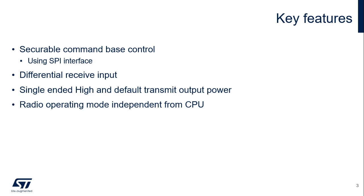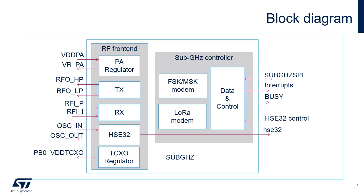The sub-Gigahertz radio can operate independently from the CPU. This means the CPU system can be in one of its low power modes while the radio is receiving or transmitting data. The sub-Gigahertz radio module is accessed through the sub-Gigahertz serial peripheral interface using SPI commands.